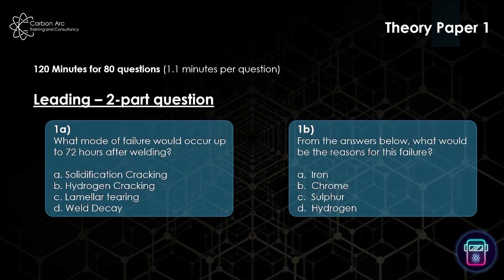So, Theory Paper One: it's 120 minutes for 80 questions, which is just over a minute per question. They're broken up into some leading questions which are two parts. So you can see here we've got question 1A and question 1B.